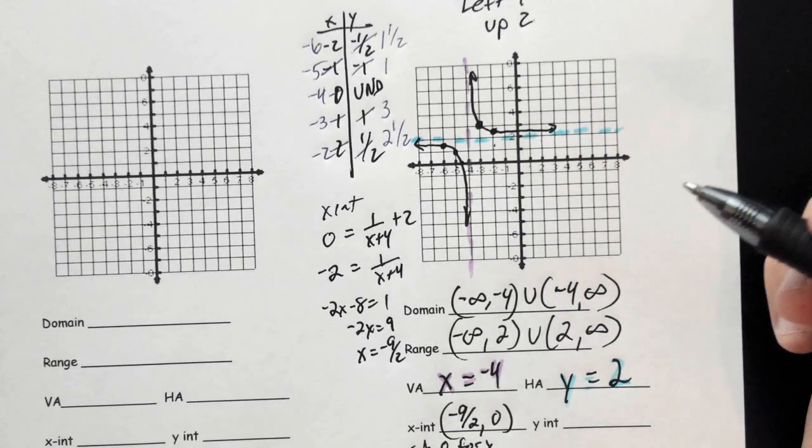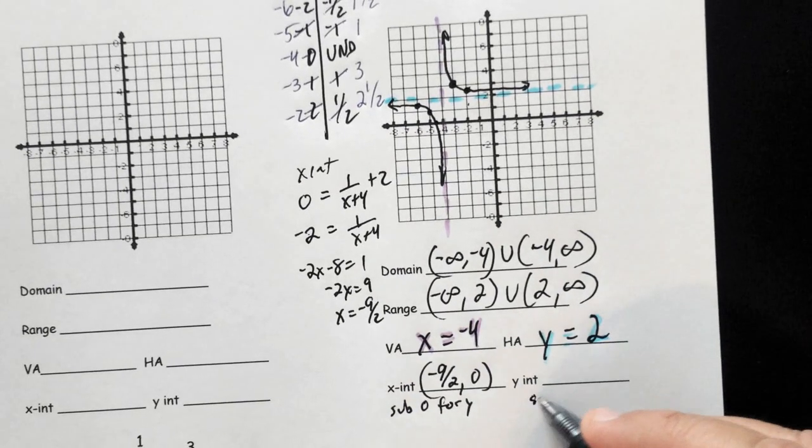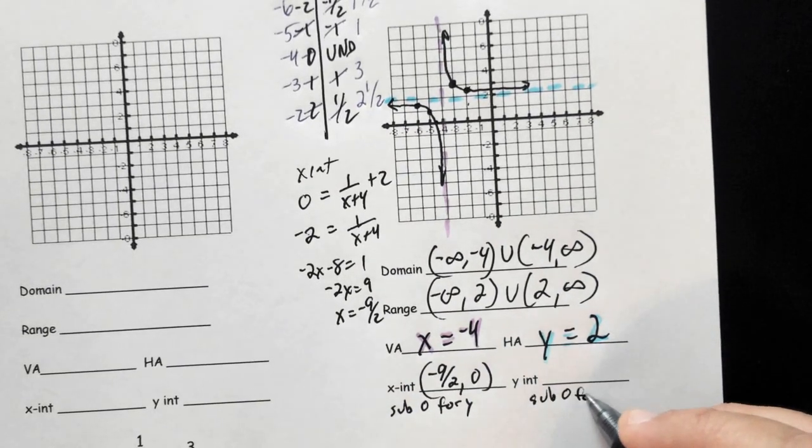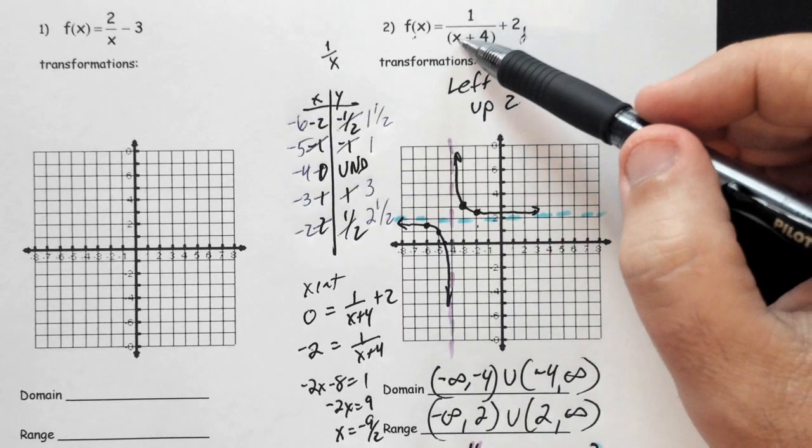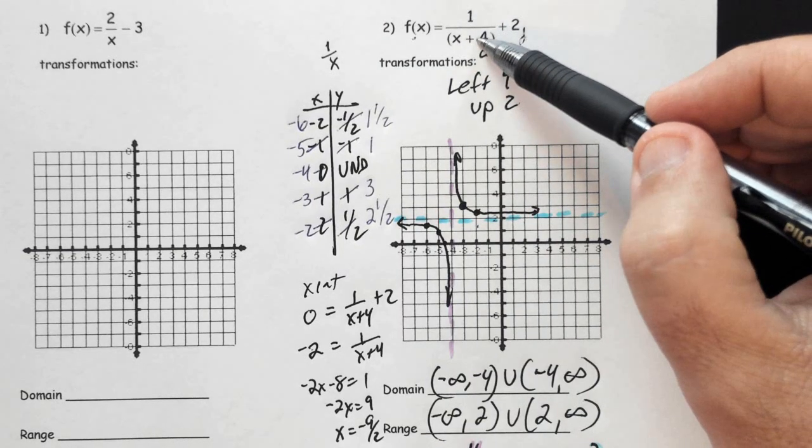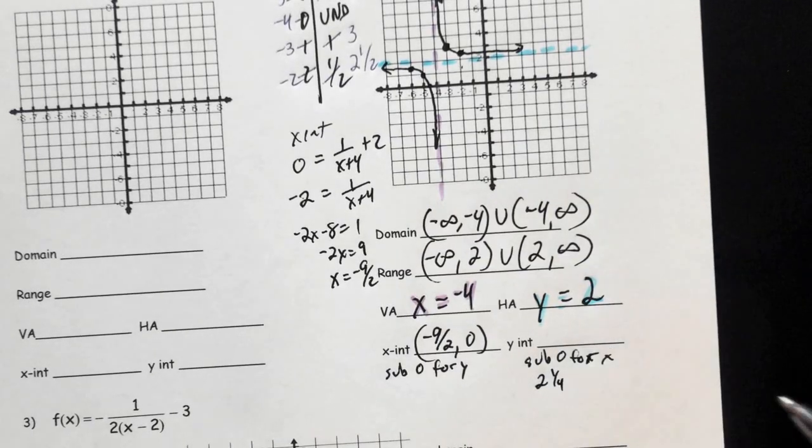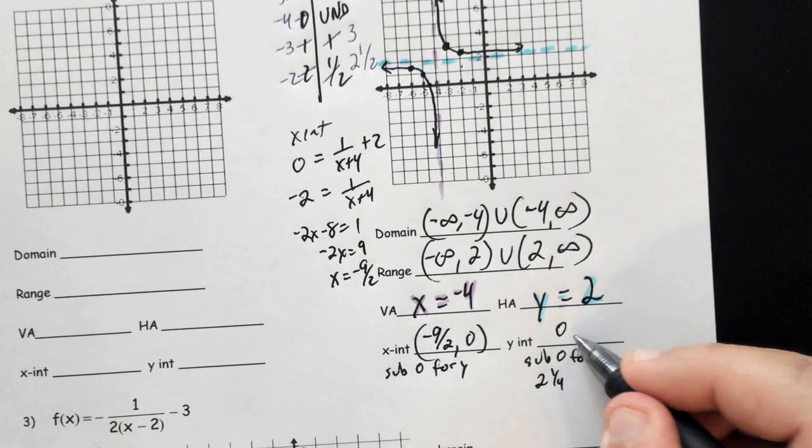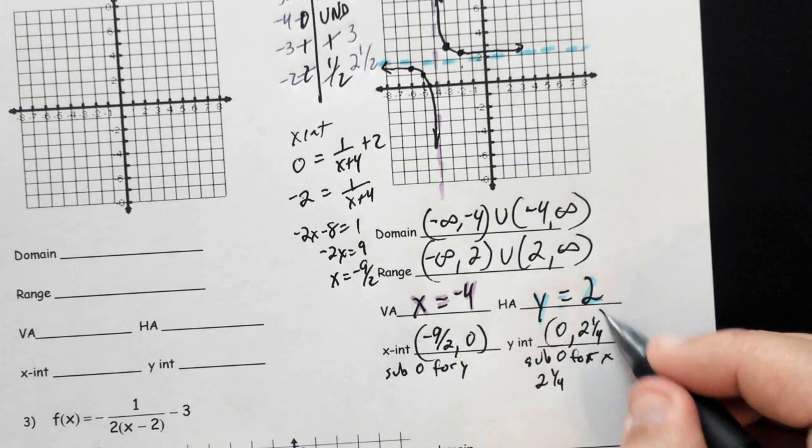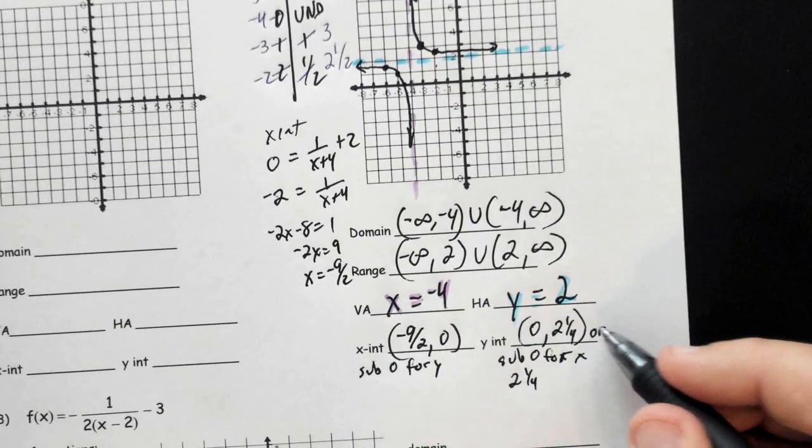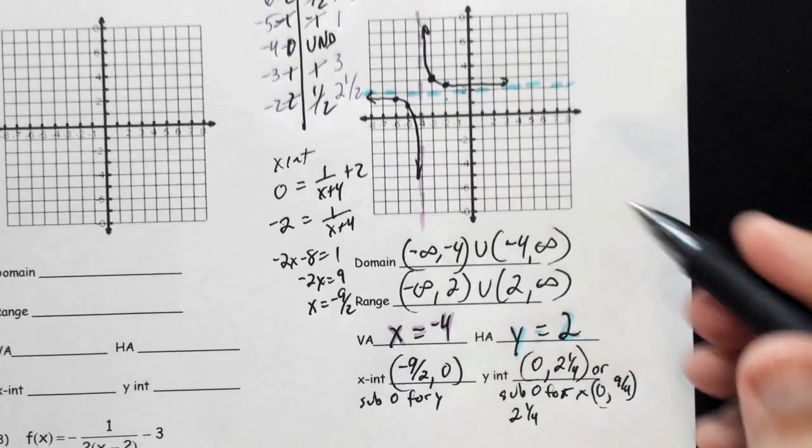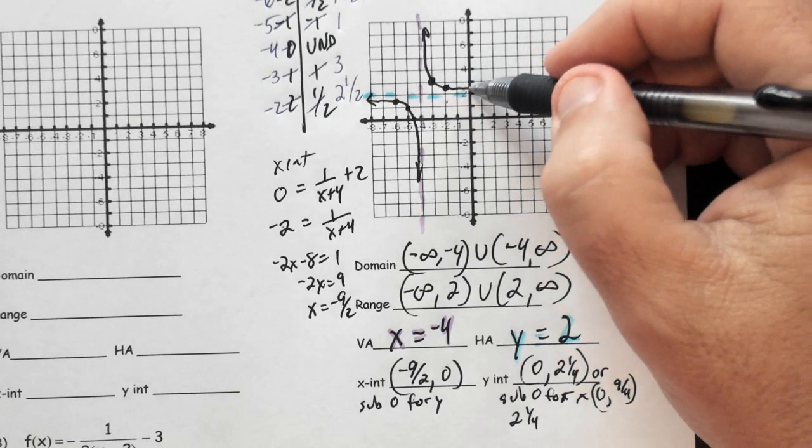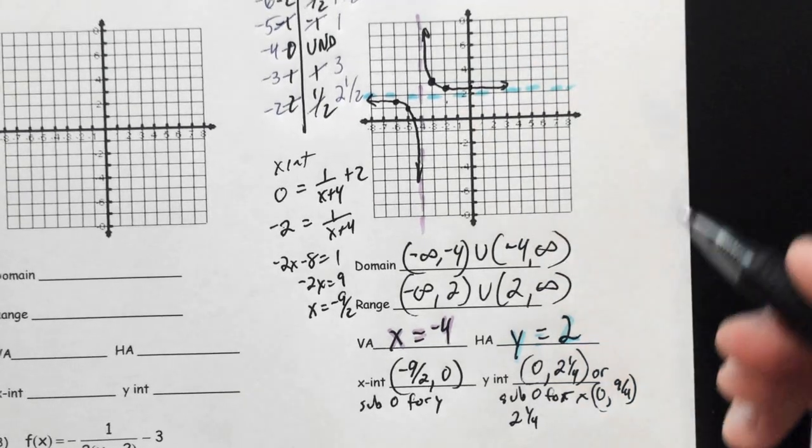Now, the y-intercept is much easier. The y-intercept, remember, is sub zero for x. And if I do that up here, that's just going to put a zero here, which is going to give me 1/4 + 2, which is 2 and 1/4. So that's going to be (0, 2 and 1/4). If you want to write 2 and 1/4, that's fine, or you could write (0, 9/4). Either way works. And 2 and 1/4 would be roughly right about there, which does work.